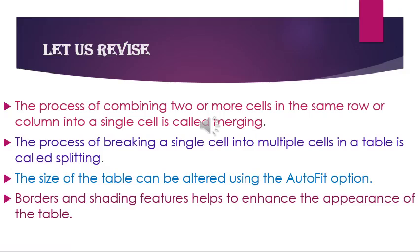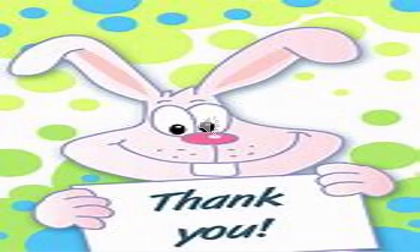Okay children, let us revise whatever we have learned today. The process of combining two or more cells in the same row or column into a single cell is called merging. The process of breaking a single cell into multiple cells in a table is called splitting. The size of the table can be altered using the Auto Fit option. Borders and shading features help to enhance the appearance of the table. I hope you have understood today's concept. Thank you.